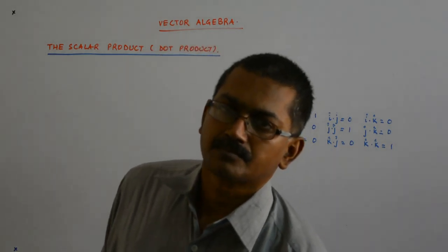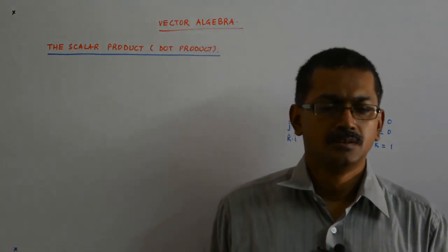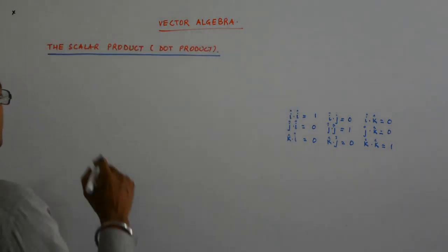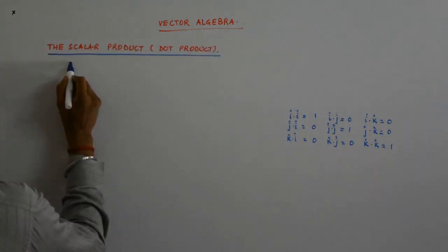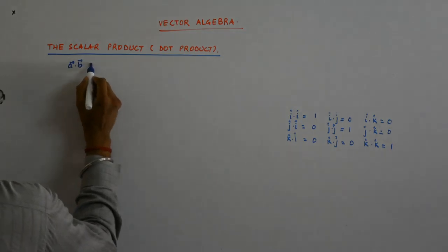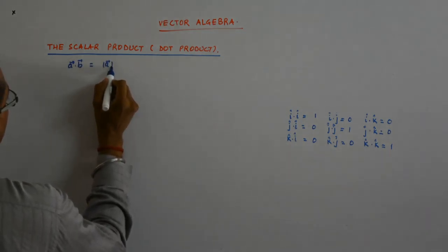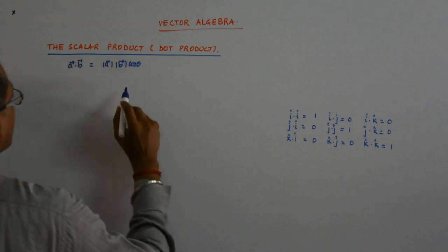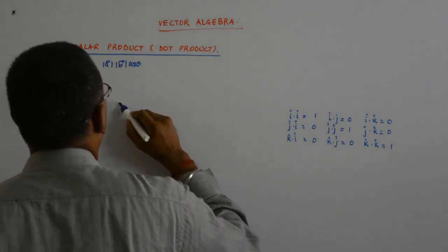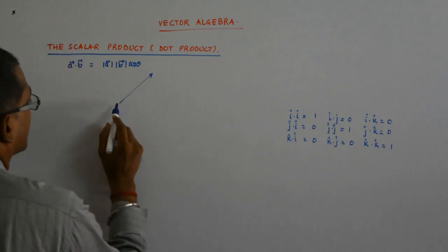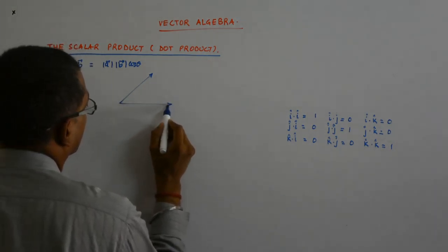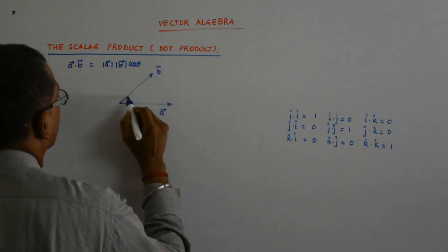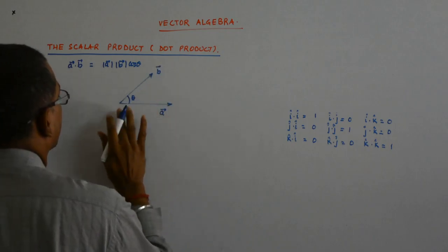Now we come to two properties of, let me recap, a dot b we had studied to be mod a mod b cos theta. And how have we defined that? This is a, this is b, this is theta.